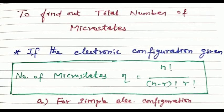Hi friends, welcome to my YouTube channel. In this video we will discuss about microstates. The number of possible ways of arrangement of electrons in a subshell is called microstates.